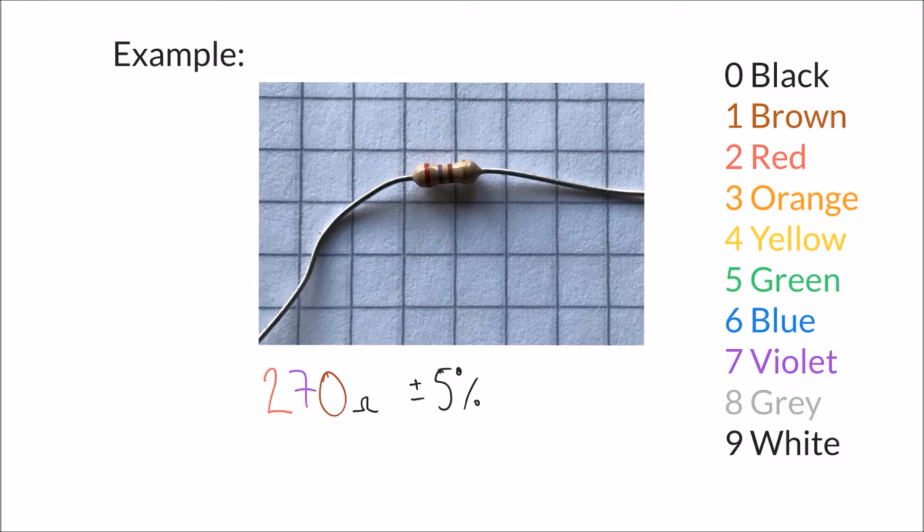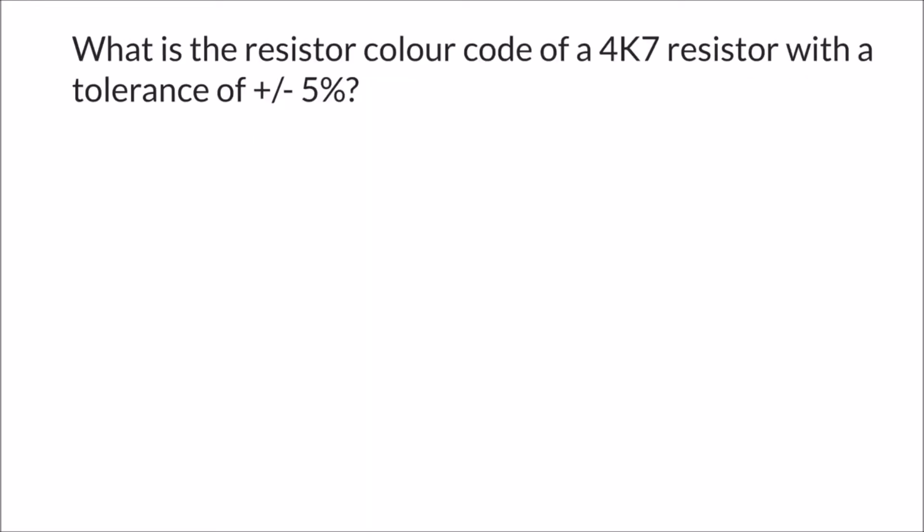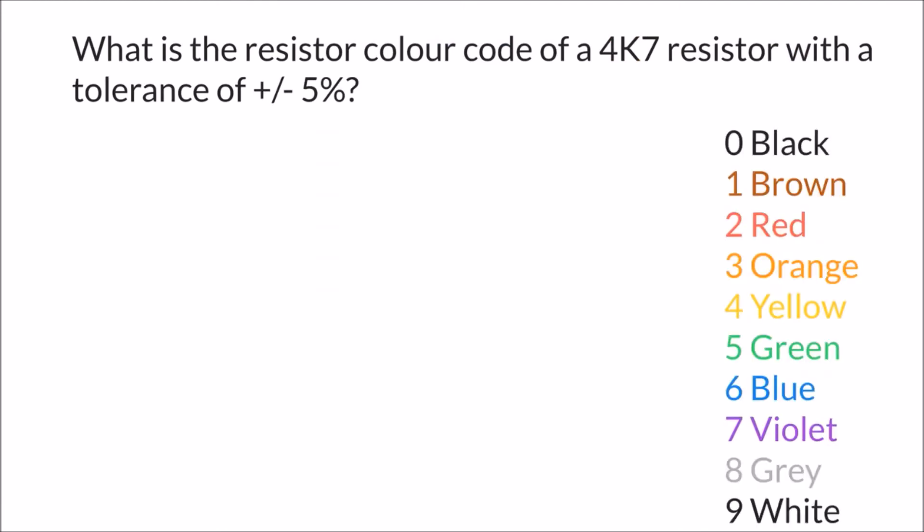Let's have a look at another example now but working the opposite way around. The question here is what is the four band color code of a 4K7 resistor with a tolerance of +/- 5%? So we're given the value of this resistor and we have to determine the color code for it.